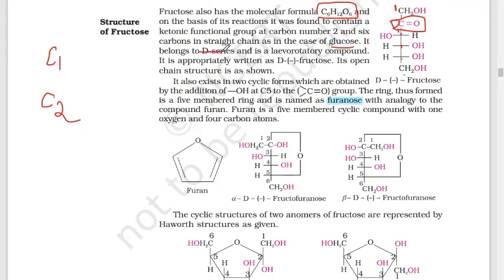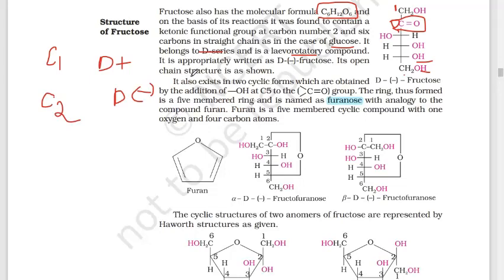Glucose is dextrorotatory, which means it has a positive sign — this is the D-configuration. Fructose, however, is levorotatory, which means it has a negative sign. So glucose is D-plus glucose, and fructose is D-minus fructose. This difference relates to optical activity and isomerism.